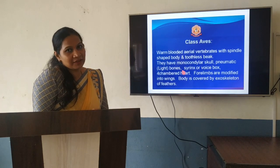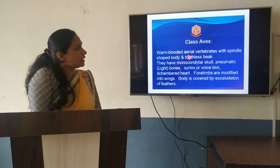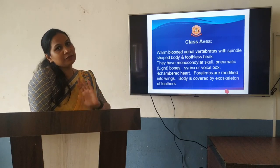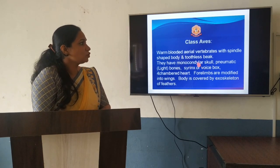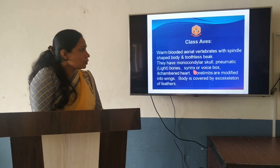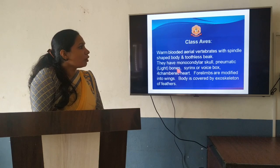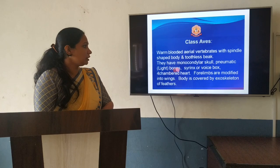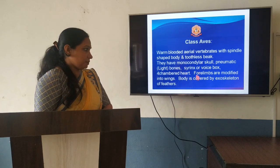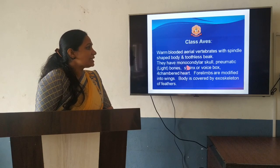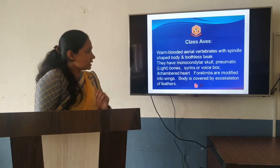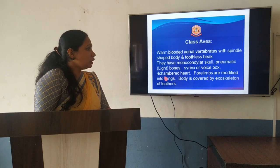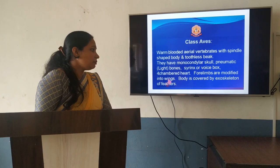Next class is Aves — the birds. They are warm-blooded organisms with a spindle-shaped body for flying, and a toothless beak. They also have a monocondylar skull and pneumatic bones — the long bones consist of air spaces — meant for flying. Their voice box is known as the syrinx; in humans it is the larynx. They have a four-chambered heart, four limbs modified into wings, and their body is covered by feathers.